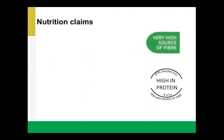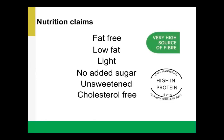Next up, we have some information around nutrition claims. There's a wide variety you might see on products, but once again they are optional. Some claims you might see are: very high source of fiber, high in protein, fat free, low fat, light, no added sugar, unsweetened, or cholesterol free. These claims must meet specific guidelines set out by Health Canada to be added on a food label. They can be helpful in choosing a product, but it's always important to look at the ingredients list and nutrition facts table rather than relying on nutrition claims alone.